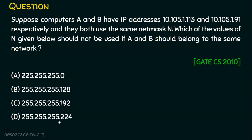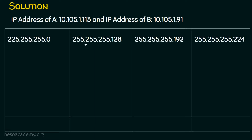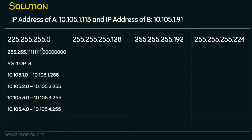Let's see the first way of solving this problem using the table approach. The IP address of A is 10.105.1.113 and the IP address of computer B is 10.105.1.91. The subnet mask is converted into binary octet form. Due to space limitations, I have taken only the third and fourth octet in binary. So 255.255 is retained, and this 255 in the third octet is all eight 1-bits, while the fourth octet is all zeros.